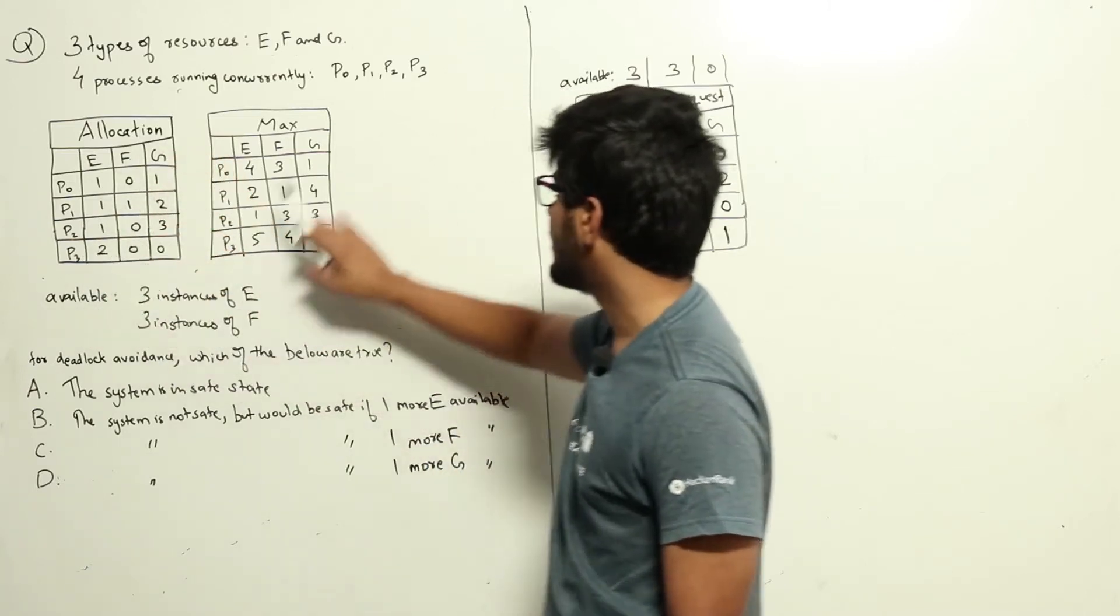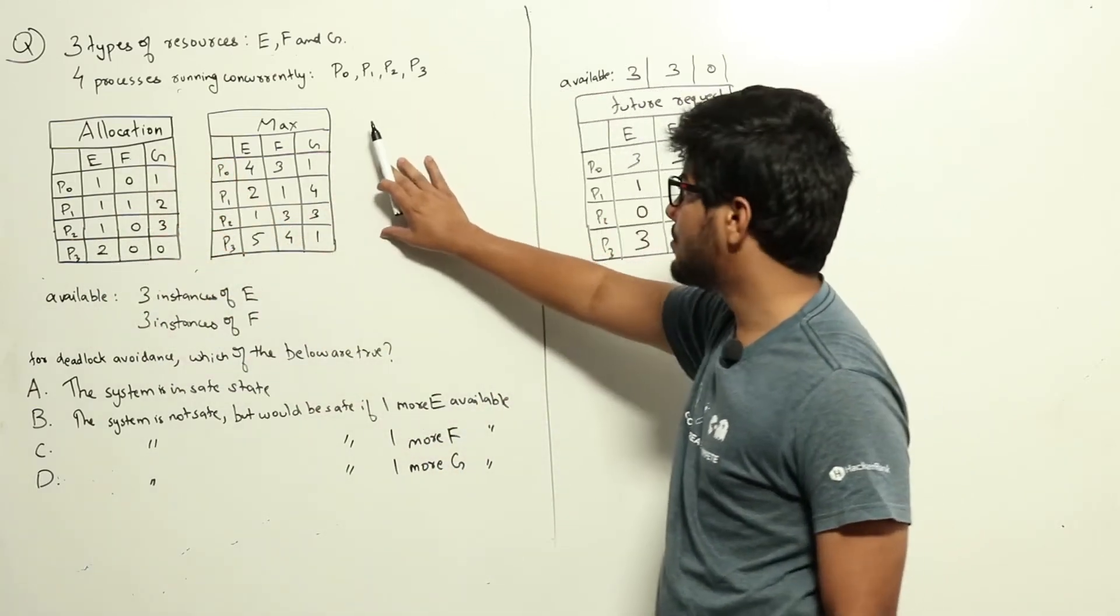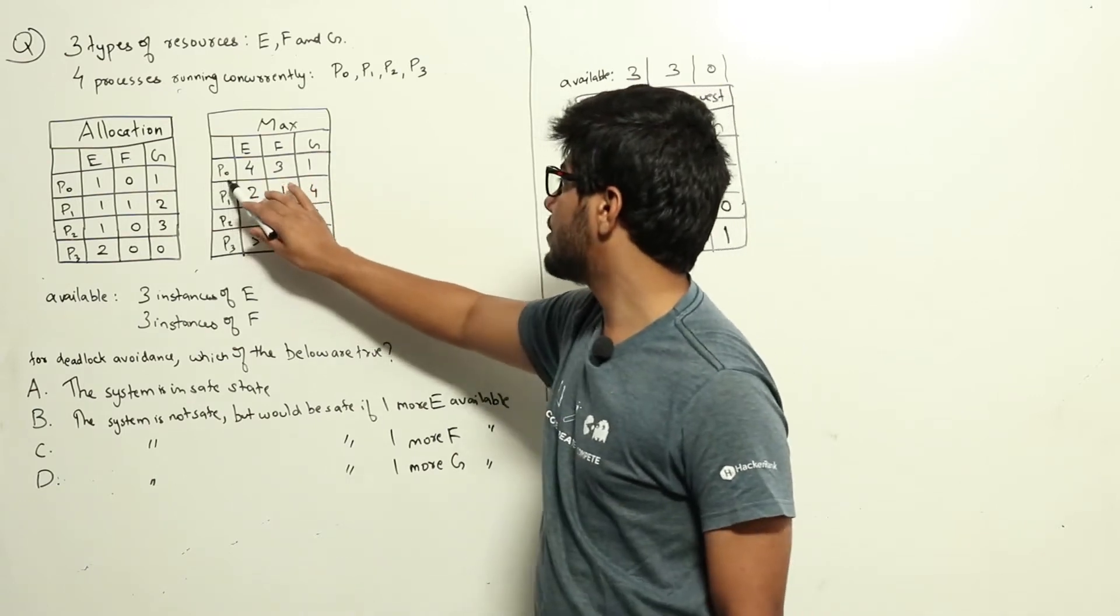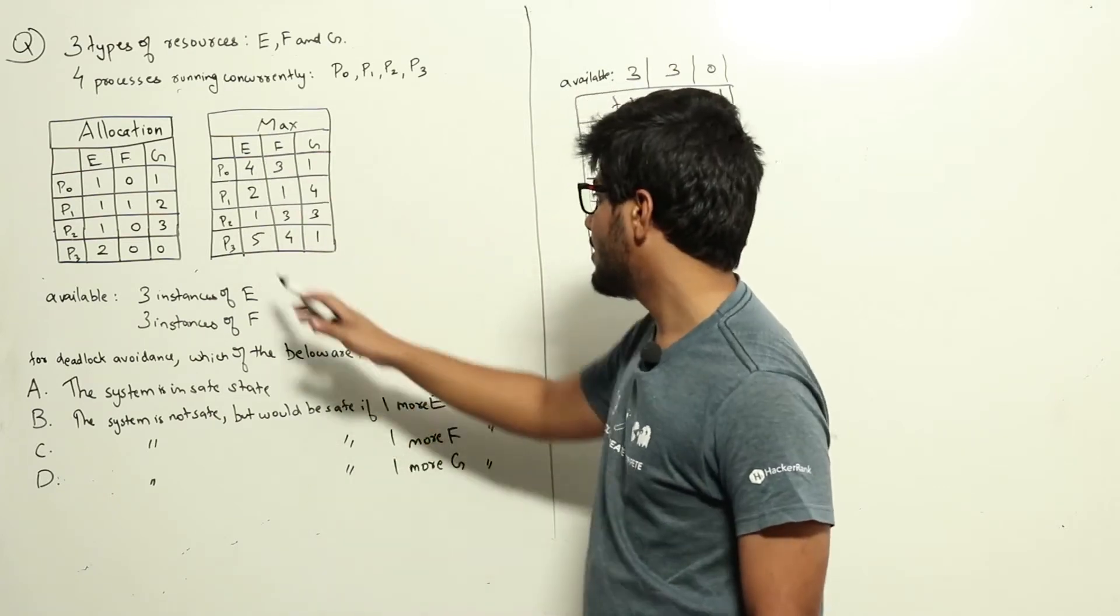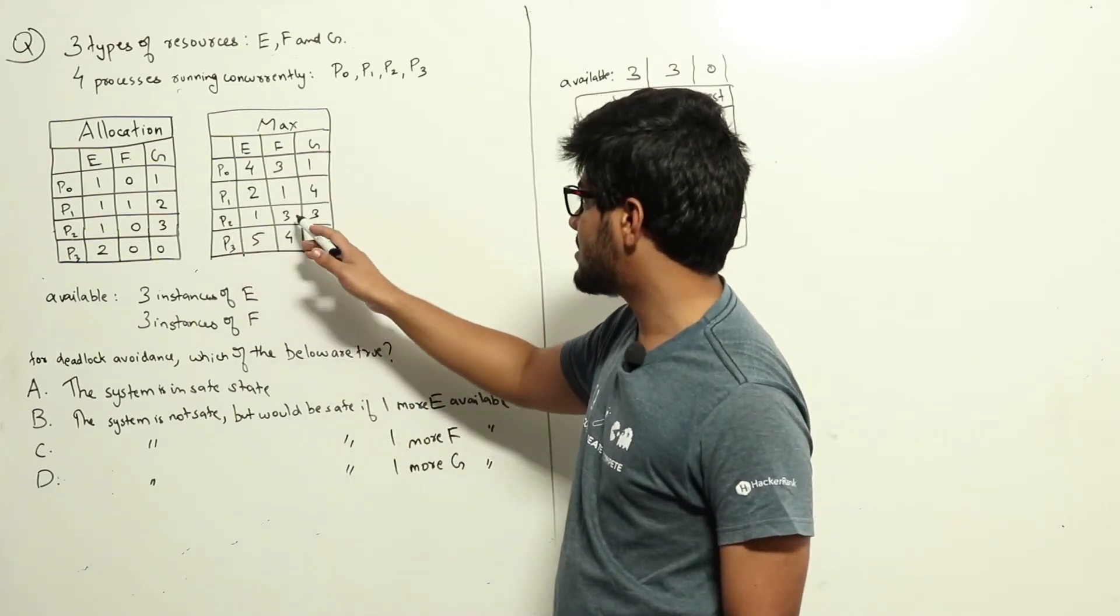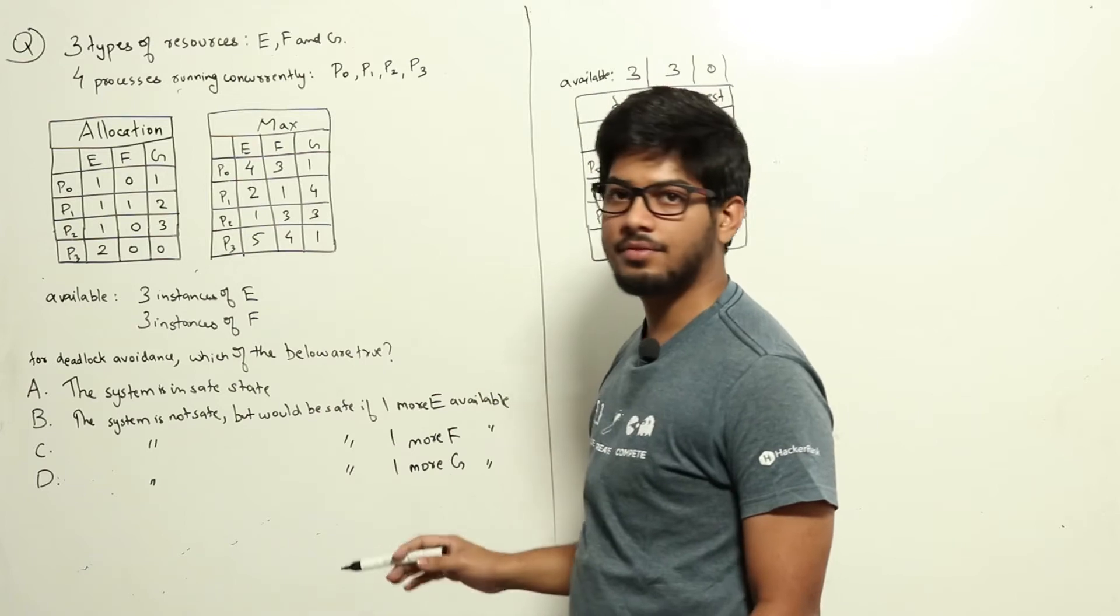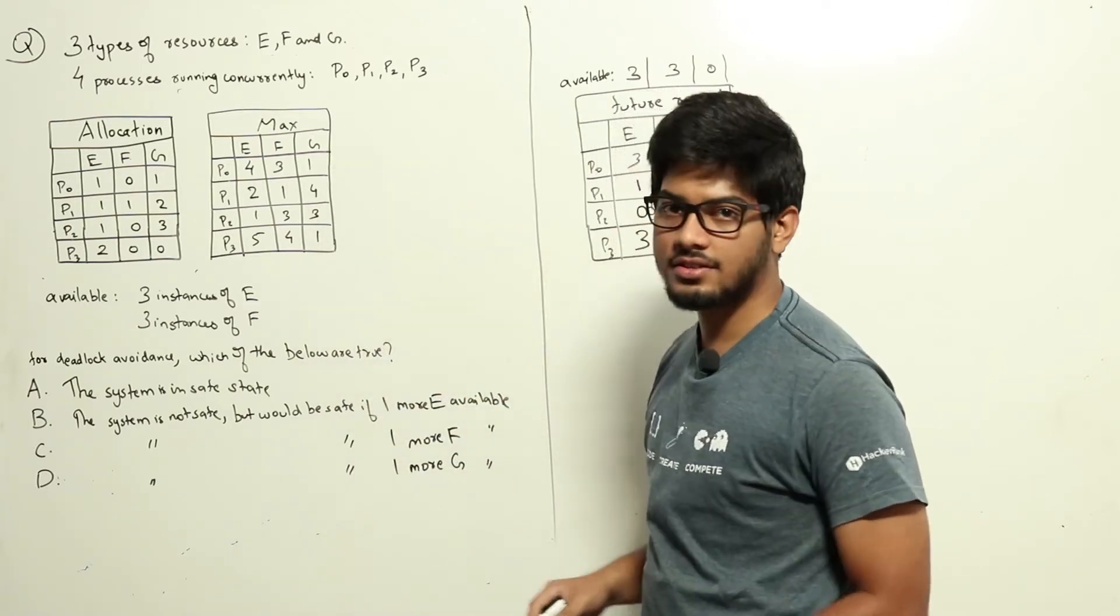This is the current allocation and this is the maximum request. P0 can request up to a maximum of four resources of type E. P2 can request a maximum of three resources of type F. This is the total request that will come.